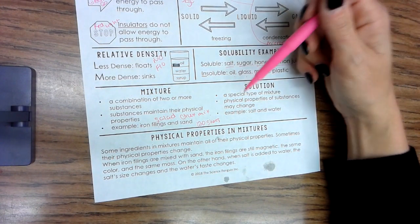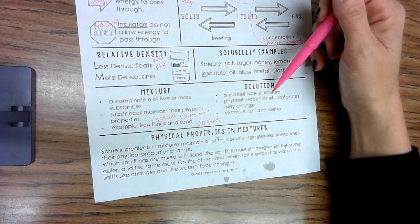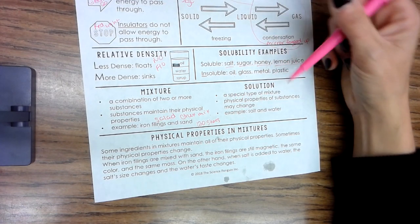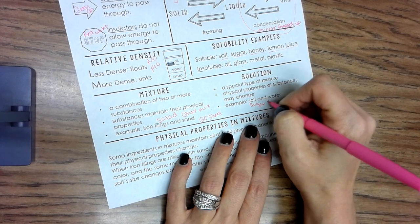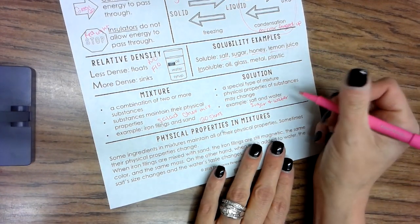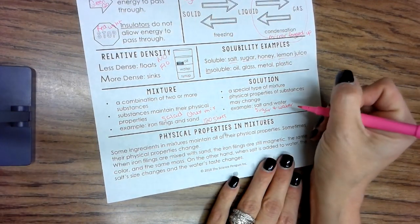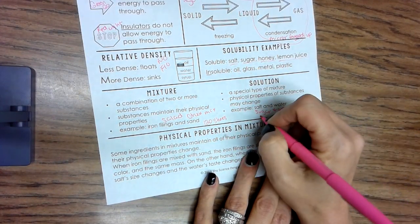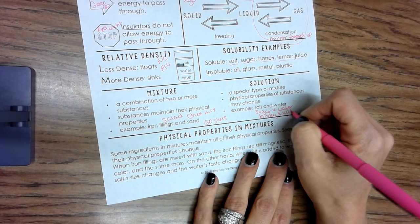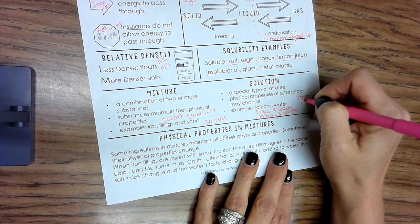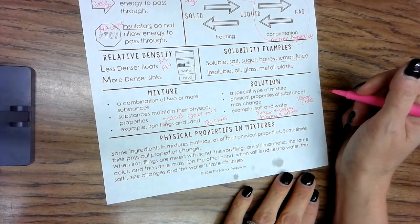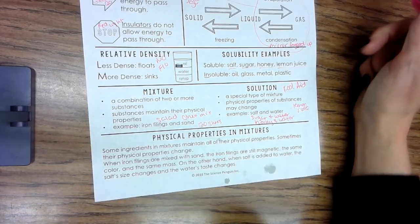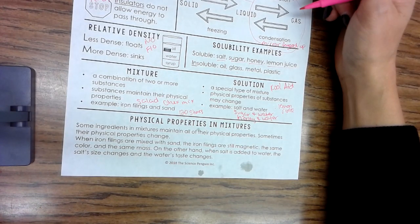A solution is a special type of mixture. It is a mixture of two or more substances. Physical properties of substances may change - they may. Examples are salt and water, sugar and water. Remember, if you wanted it sweet, you should add it some heat. Honey and water, lemon juice and water. Kool-Aid, of course - gosh, how did we forget that? Anything and everything that you can combine two ingredients of and it turns into one new substance, then that's a solution.